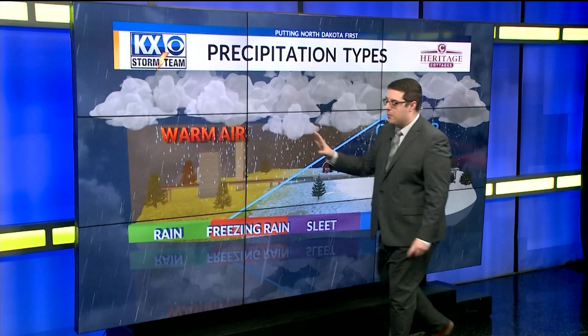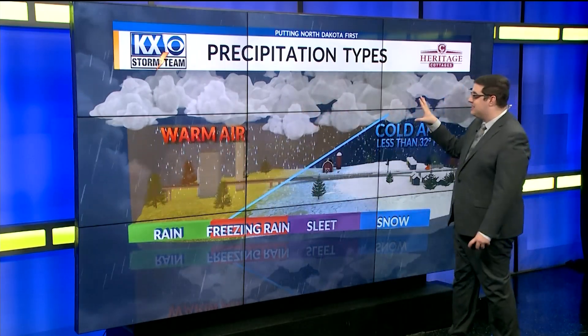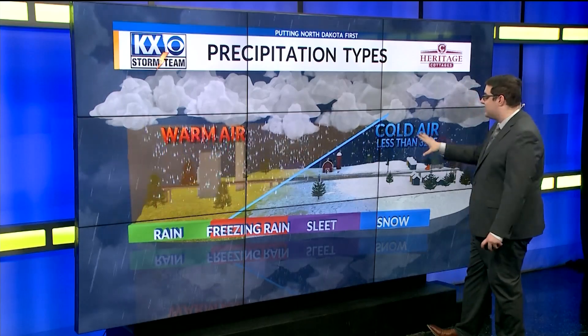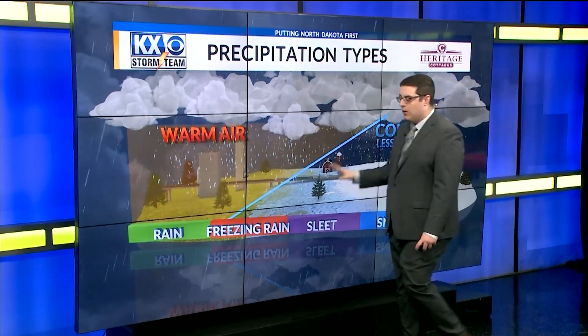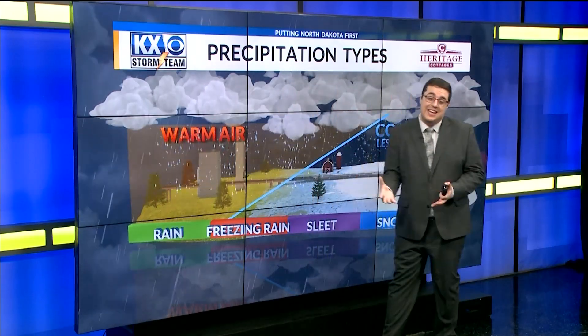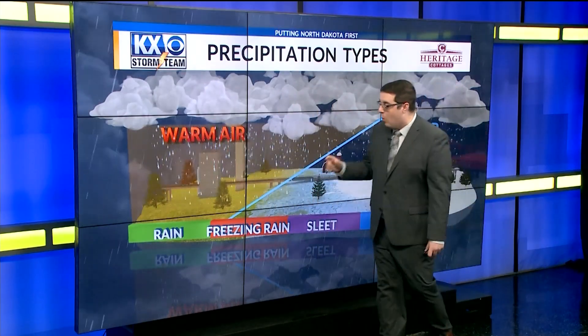We start off with the warmest one, which is obviously rain, and it's all based on this blue line here that signals where we see cold air — less than 32 degrees. When we're in rain, we have all of our atmosphere from the cloud to the ground being above that freezing mark, giving us rain like we've been seeing over the last couple of days.